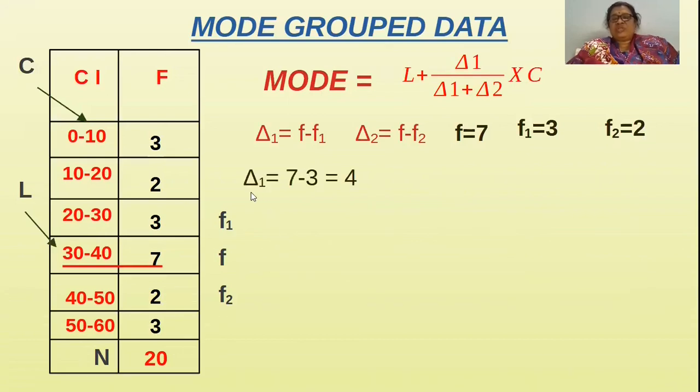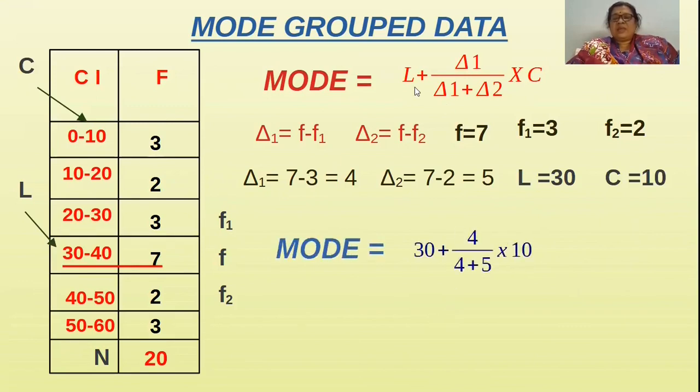Now first we will find out what is delta 1 and delta 2. Delta 1 is 7 minus 3 is 4, and delta 2 is 7 minus 2 is 5. Lower bound is 30 and class interval is 10. Now we will substitute like 30 plus delta 1 is 4. Denominator delta 1 plus delta 2, you can write 4 plus 5 into 10. C is 10.